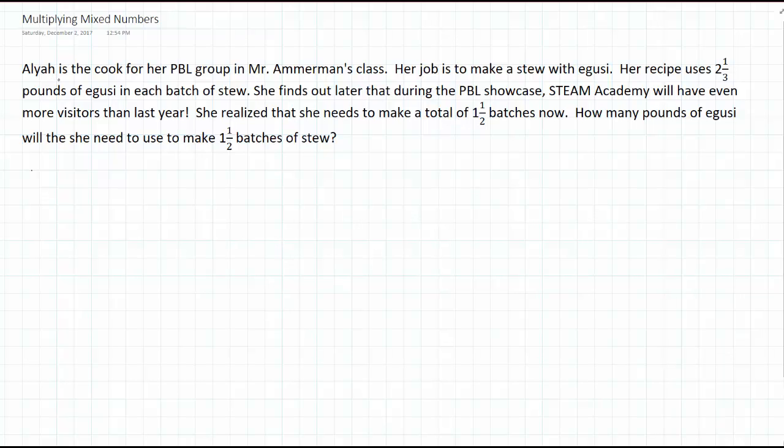For a review of multiplying mixed numbers, we're going to go over some strategies. One that does not work but is very common, and two that do work. We have Aaliyah who's the cook for her PBL group in Mr. Amman's class. Her recipe uses 2⅓ pounds of eggusi in each batch of stew. She finds out that during the PBL showcase, STEAM Academy will have even more visitors than last year. She realizes she needs to make a total of 1½ batches now. How many pounds of eggusi will she need?